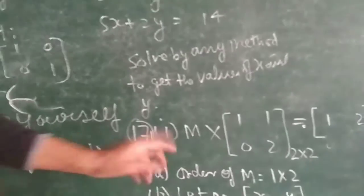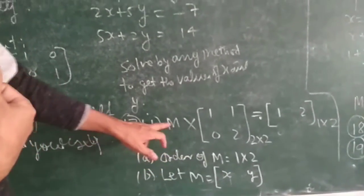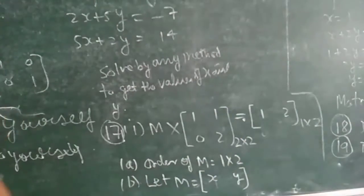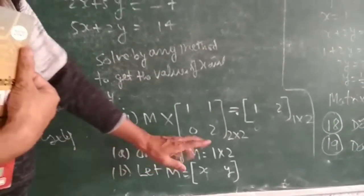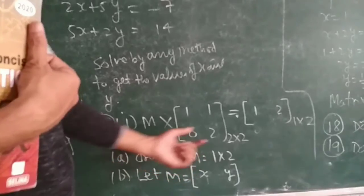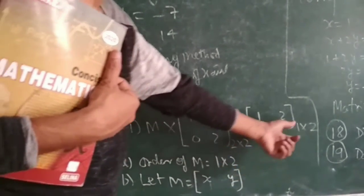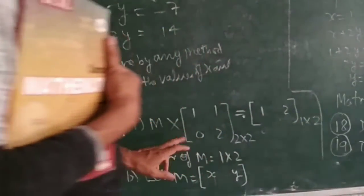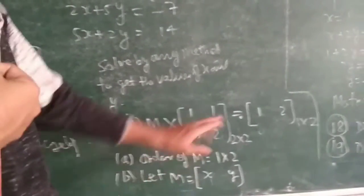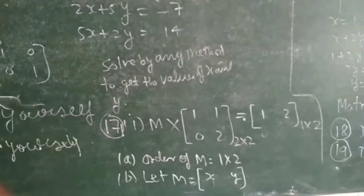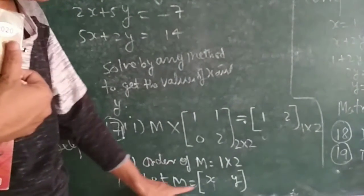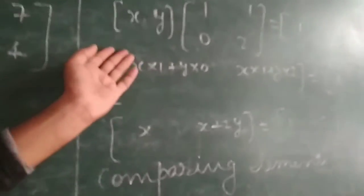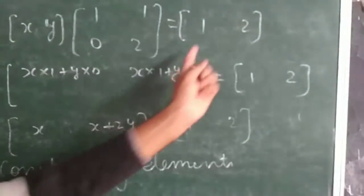Question number 17. You are given a matrix M which has to be multiplied with the matrix [1, 1; 0, 2], and the answer is given as [1, 2]. First we have to find the order of M. The order of [1, 1; 0, 2] is 2 by 2, and the order of the result [1, 2] is 1 by 2, so the order of M would be 1 by 2. Then M equals [x, y], and we put [x, y] multiplied by [1, 1; 0, 2] equal to [1, 2].